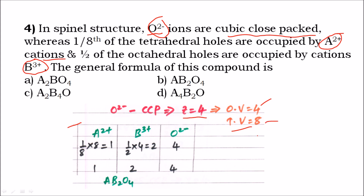For A²⁺: one-eighth of tetrahedral holes — one-eighth of eight equals one, so A²⁺ equals one. For B³⁺: half of octahedral holes — one-half of four equals two, so B³⁺ equals two. O²⁻ is directly from the CCP structure, so oxide ions equal four.